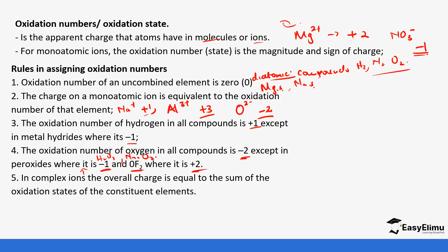In complex ions, the overall charge is equal to the sum of the oxidation states of the constituent elements. For example, in tetraamine copper(II) ion, the oxidation state of copper is +2 and that of amine is zero, so the overall charge of the complex ion is 2+ or oxidation number positive 2.